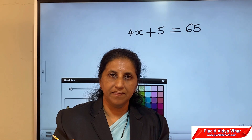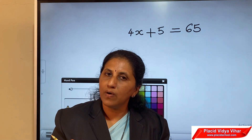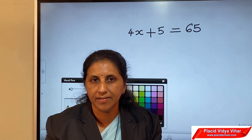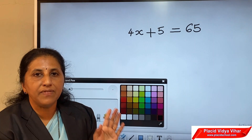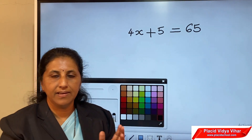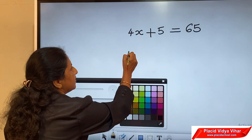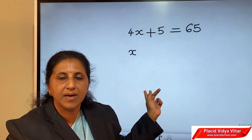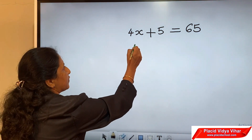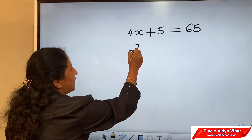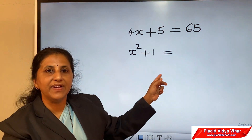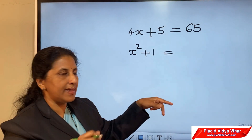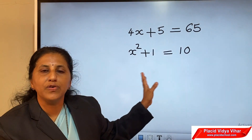Consider another example: add 1 to the square of a number gives you 10. The number is unknown, so take it as variable x. The square of the number x is x squared. Then add 1: x squared plus 1. That is given as 10. So your equation is x squared plus 1 equals 10. This is also an equation.